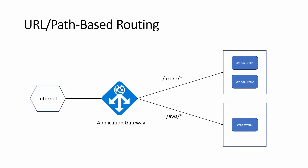Now let's move on to path-based or URL-based routing. So till now, when a request is coming to the front-end IP of the Application Gateway, it's getting directly rerouted towards the backend pool. But in the case of path-based or URL-based routing, Application Gateway will smartly check the URL in the request header and then decide which backend pool it should go to. As in this lab, if the URL has 'Azure' in it, it will go to the Azure backend pool, and if it has 'AWS' in it, it will go to the AWS backend pool. So let's deploy this setup in Azure Portal.